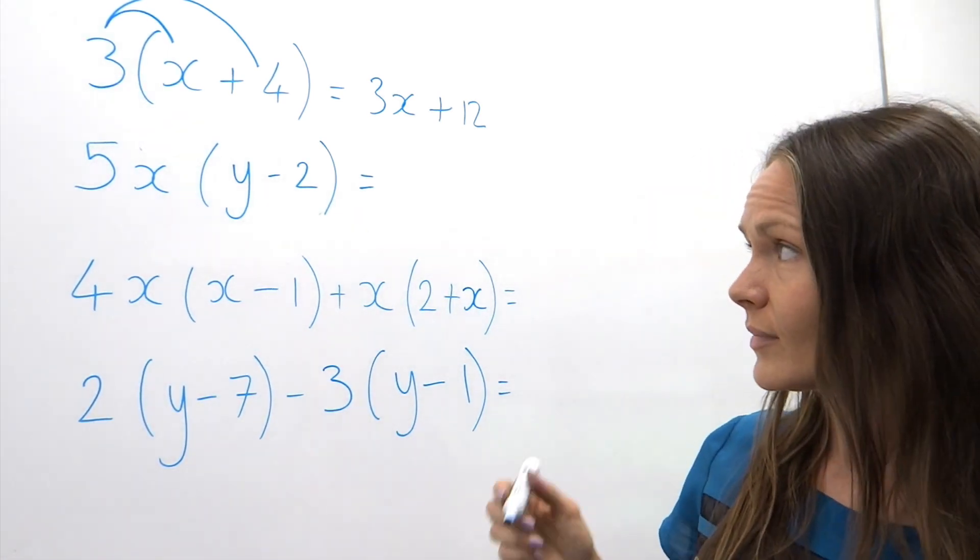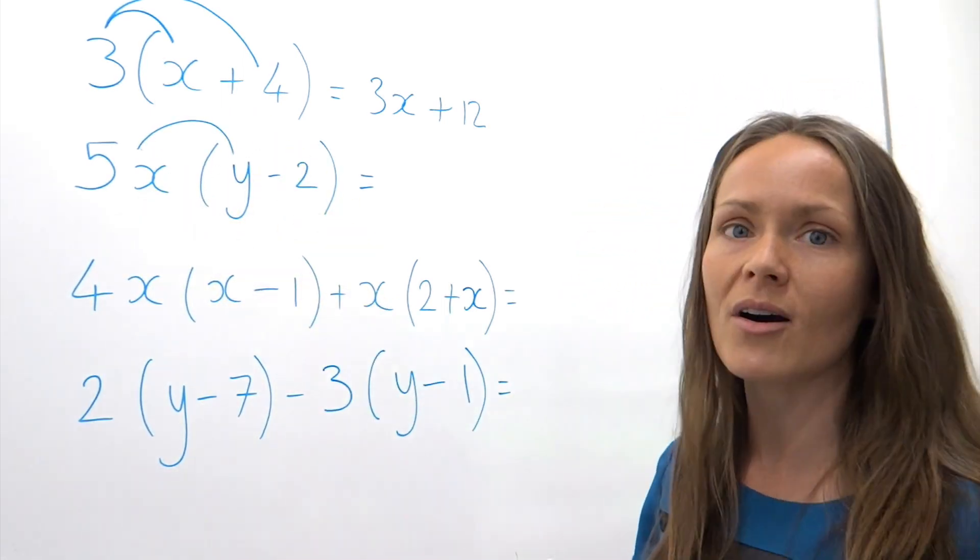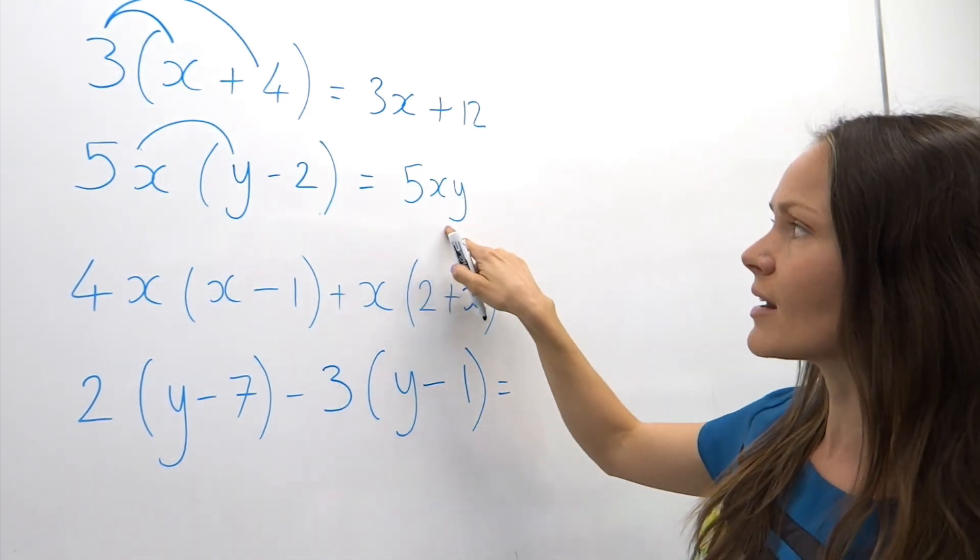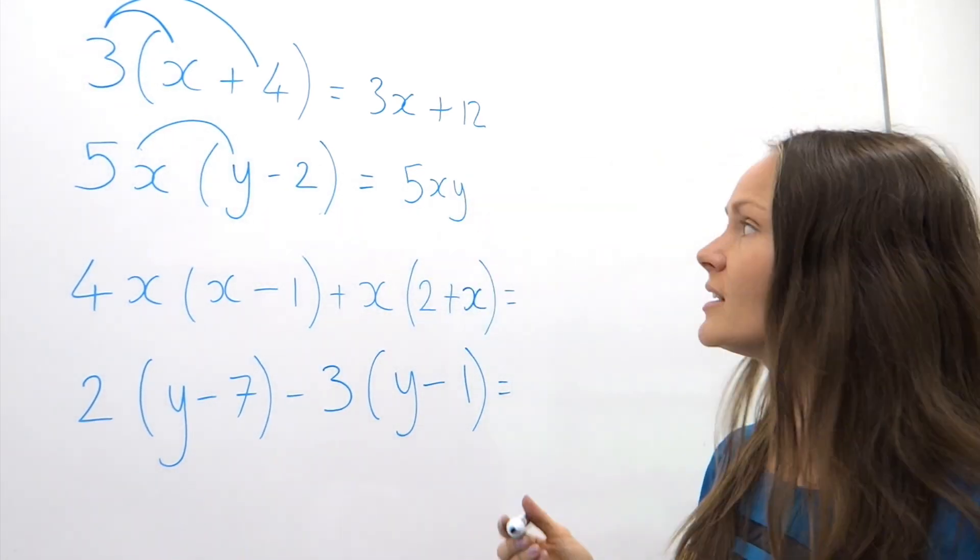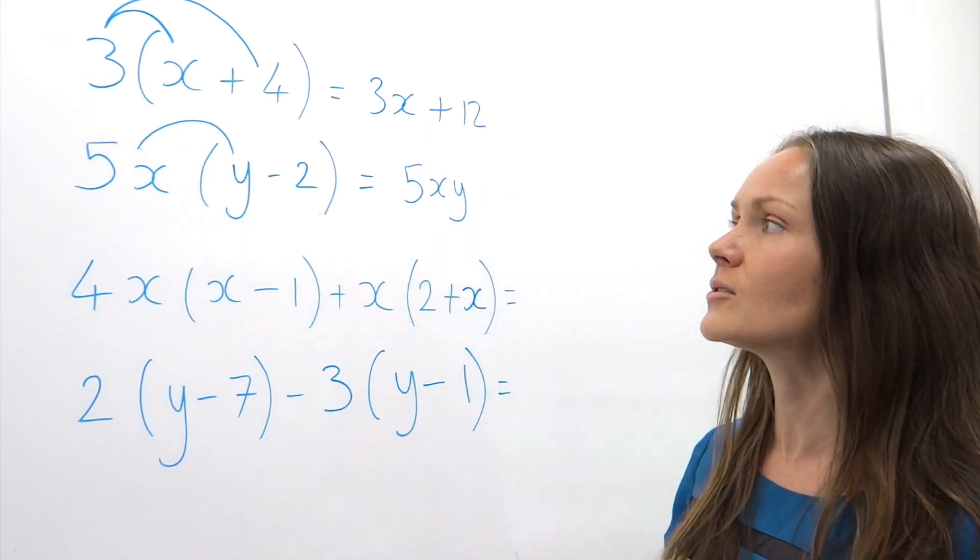In the second one, step number one, we're going to multiply 5x by y, so that gives us 5xy. Remember, when they're grouped together like this, it means they're being multiplied. You don't have to write times in between the letters or the numbers.